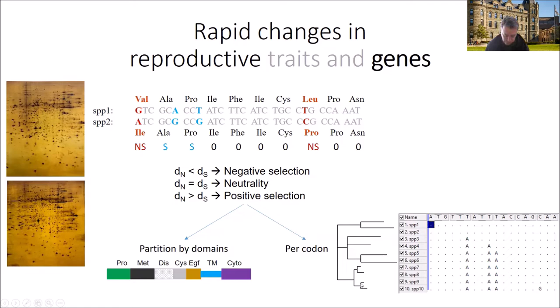What we found for seminal fluid proteins is that they are more divergent among species of Drosophila than other proteins — and this is true for other species as well. This is a figure from a paper we published in 2007, a collaboration with Mariana Wolfner's lab at Cornell and Rama Singh at McMaster. We calculated the proportion of non-synonymous to synonymous substitutions for genes expressed in the testes, ovary, testes and ovaries, and so on. What we found is that seminal fluid proteins have the higher ratio of non-synonymous to synonymous substitution in comparison across species, driven by an acceleration in the proportion of non-synonymous changes.